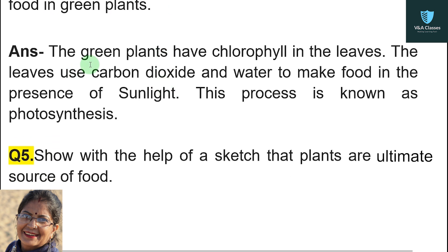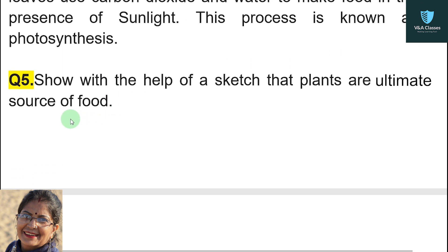Question number four: give a brief description of the process of synthesis of food in green plants. The green plants have chlorophyll in the leaves. The leaves use carbon dioxide and water to make food in the presence of sunlight. This process is known as photosynthesis.